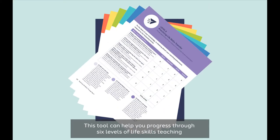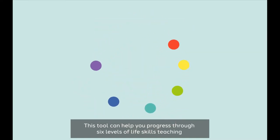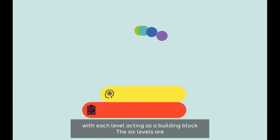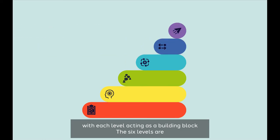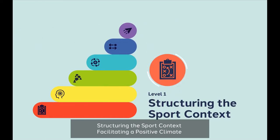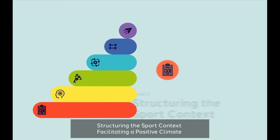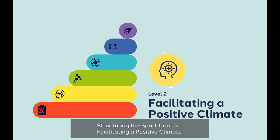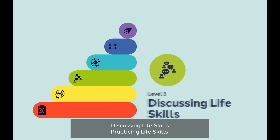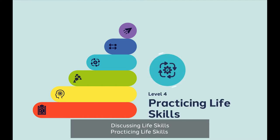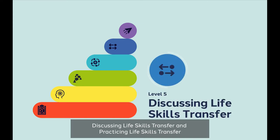This tool can help you progress through six levels of life skills teaching, with each level acting as a building block. The six levels are: structuring the sport context, facilitating the positive climate, discussing life skills, practicing life skills, discussing life skills transfer, and practicing life skills transfer.